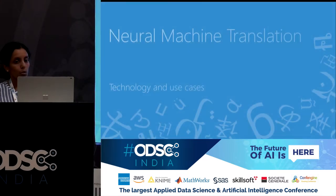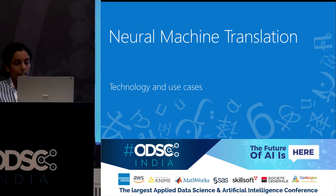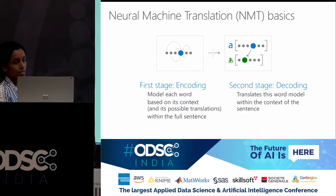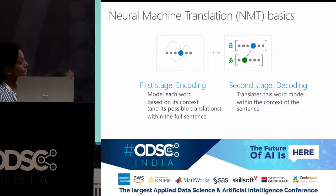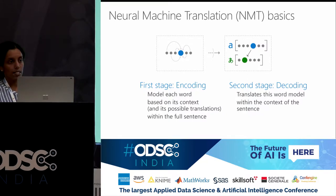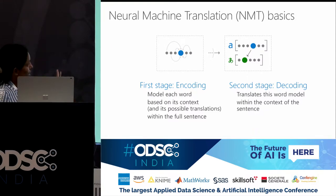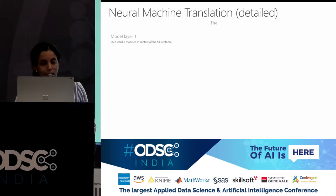Now let's get into what neural machine translation is, because that's what we use and most companies use right now. To understand this, here's an overview — we'll get into a deep dive on the next slide. We essentially look at neural machine translation as just two steps: the first is encoding and the second is decoding.